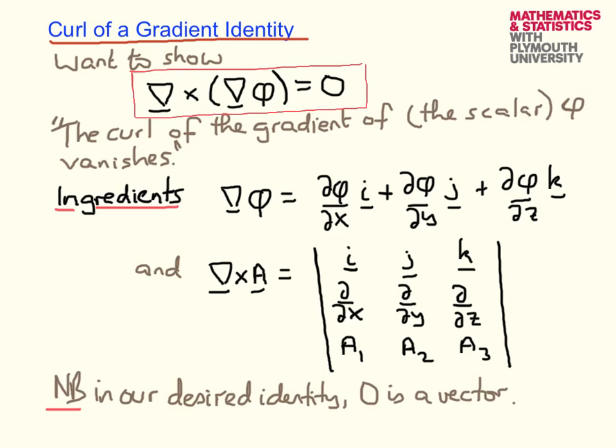The ingredients we're going to need are what is a gradient, and that I've written out here, and then what is the curl. The curl for a general vector field, call this A here, has this form here.